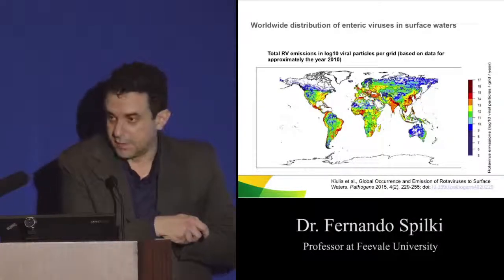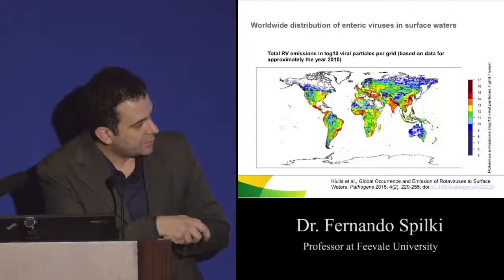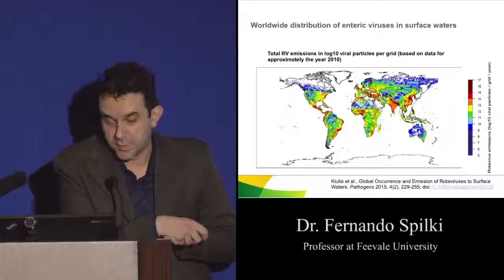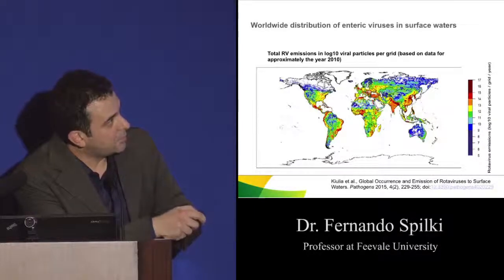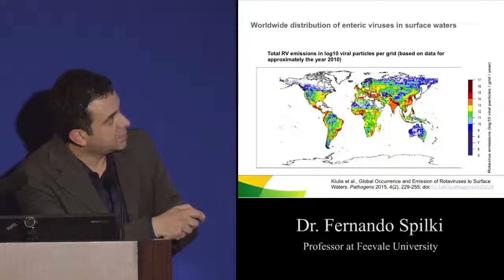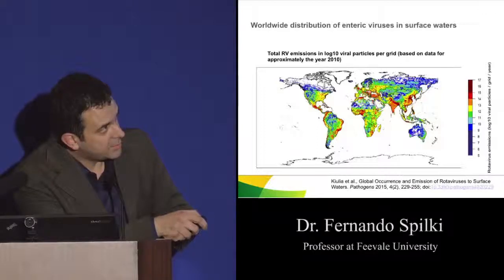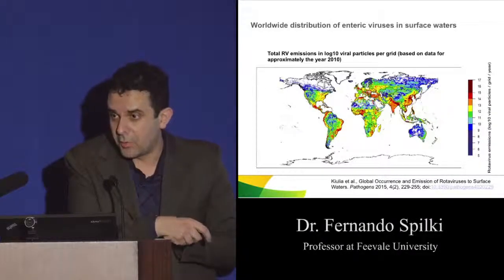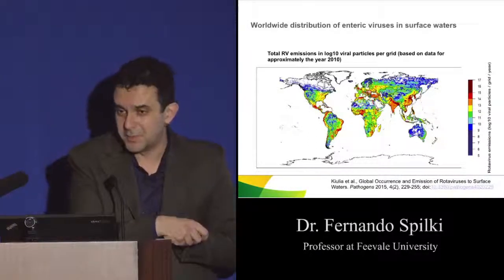This slide is very interesting. This is a very recent publication by the staff of Dr. John Rose from the University of Texas. She made a huge meta-analysis of data published by many groups of environmental virology around the world. She showed us that when you see red dots, something like 10 to the 15 or 10 to the 17 viral particles are being shed to the environment on a yearly basis. The contamination is huge.